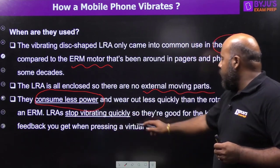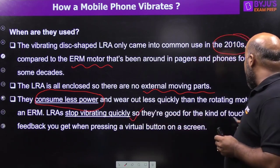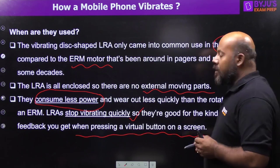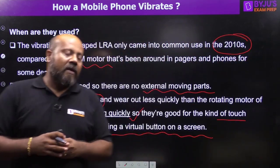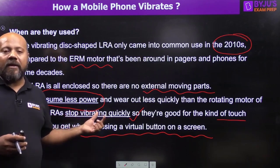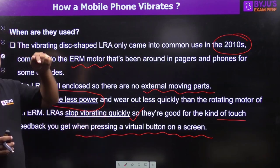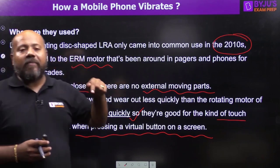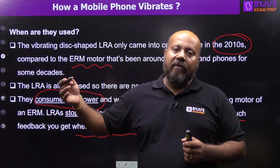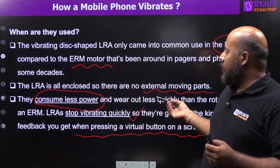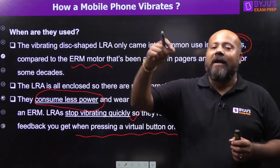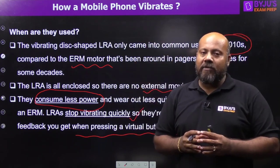LRAs stop vibrating quickly, so they are good for the kind of touch feedback you get when pressing a virtual button on the screen. Your touchscreen mobiles use this kind of LRA — linear resonance actuator — so that the on and off of vibration mode is very smooth, unlike the eccentric rotating mass motor which does not give that smooth an output in terms of vibration.